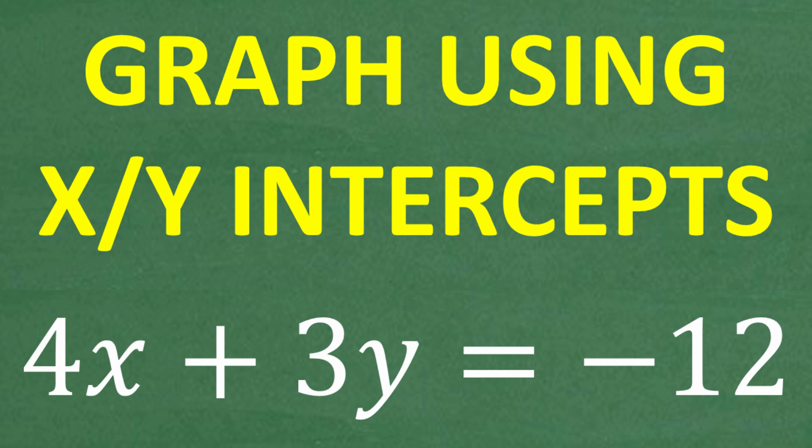Okay, so we have an equation here, and we want to go ahead and graph this using the intercepts. So what type of equation is this? Well, let me go ahead and tell you. This is what we call a linear equation.